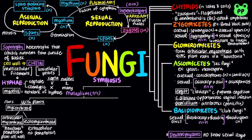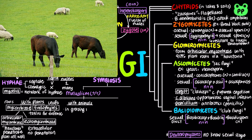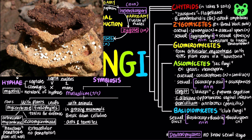Fungi form various symbiotic relationships with other organisms. Besides mycorrhizae, plants also harbor symbiotic endophytes that live inside leaves or other plant parts. Endophytes make toxins that deter herbivores and defend against pathogens. Some fungi share mutualistic symbiotic relationships with animals; in grazing mammals, fungi may help break down cellulose derived from plant cell walls. Many species of ants and termites use the digestive power of fungi by raising them in farms.